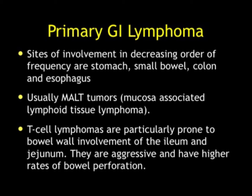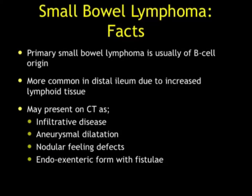Small bowel lymphoma is usually of B-cell origin and more common distally — one way of distinguishing adenocarcinoma versus lymphoma. Lymphoma is more common distally; adeno is more common proximally. Both can be bulky. Lymphoma tends to have more nodes than adenocarcinoma and tends to involve multiple organs — liver, spleen, kidneys. With adenocarcinoma, we typically think about liver involvement.